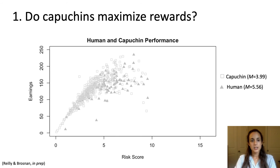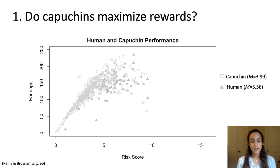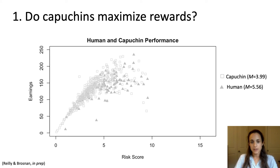Going back to our question, the data shows both capuchin monkey and human data across all sessions. There is a lot of variability, but we find that humans on average are maximizing more so than capuchins. Capuchins, on average, cluster around the four-inflation or four-token mark — well below the optimal 16-inflation strategy — indicating they behave more cautiously than expected if they were playing to maximize rewards.